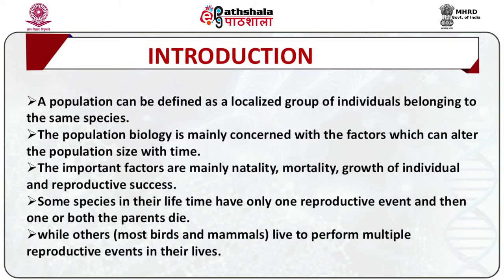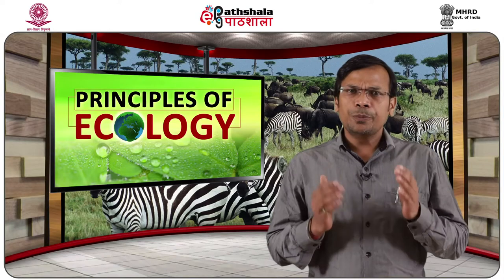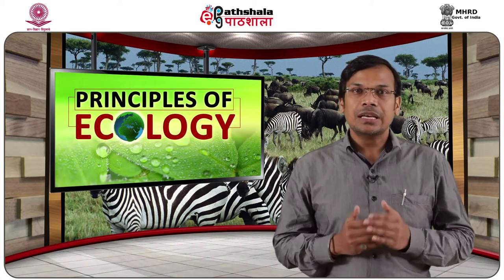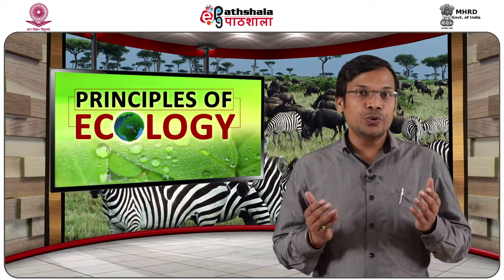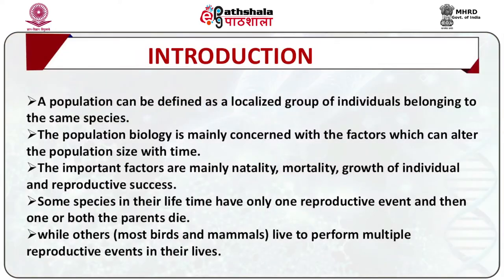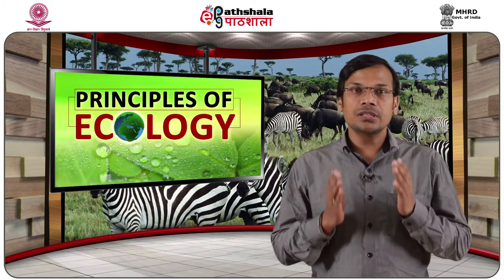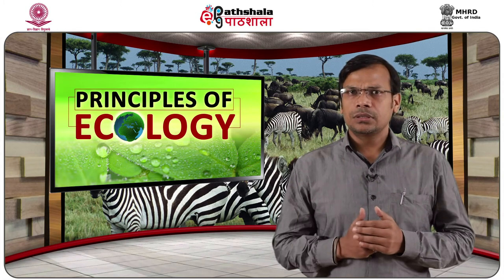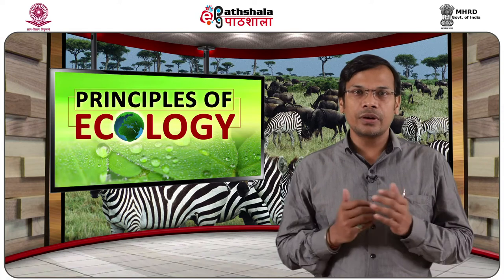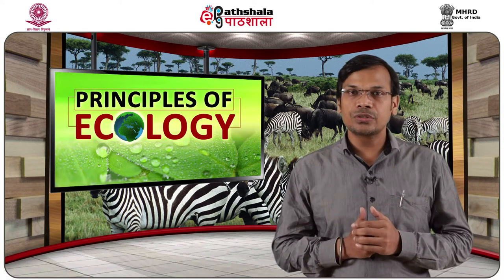Some species, like most invertebrates, have only one reproductive event in their lifetime, after which one or both parents die. The reproductive efforts of these species spend enormous energy in order to produce large numbers of eggs. Others, like birds and mammals, live to perform multiple reproductive events. There is a large amount of variation within these two categories; some semelparous organisms have overlapping generations of young ones.